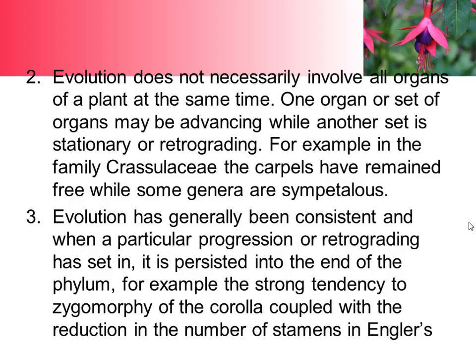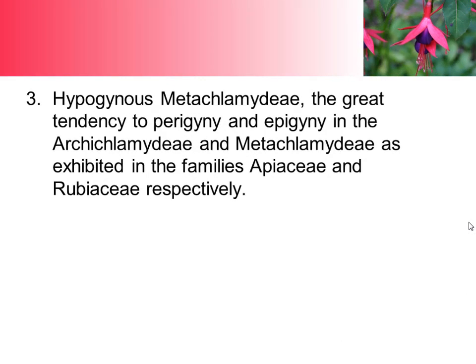Evolution has generally been consistent, and when a particular progression or retrograding has set in, it persists to the end of the phylum. For example, the strong tendency to zygomorphy of the corolla coupled with the reduction in the number of stamens, and the great tendency to perigyny and epigyny in the Archichlamydeae and Metachlamydeae as exhibited in the families Apiaceae and Rubiaceae respectively.